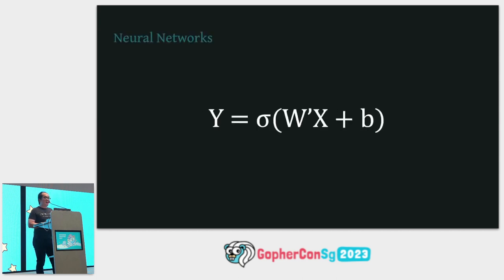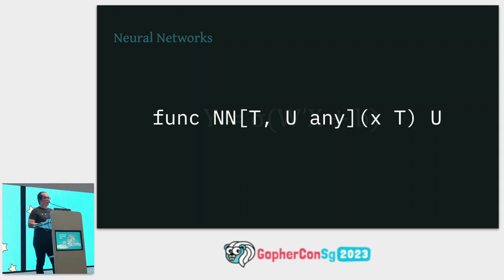A neural network is a mathematical function. You can think of them as a function like this too, except you don't write the body — you let the machine learn what the body is. And how does it do that? Let's return to the mathematical expression.